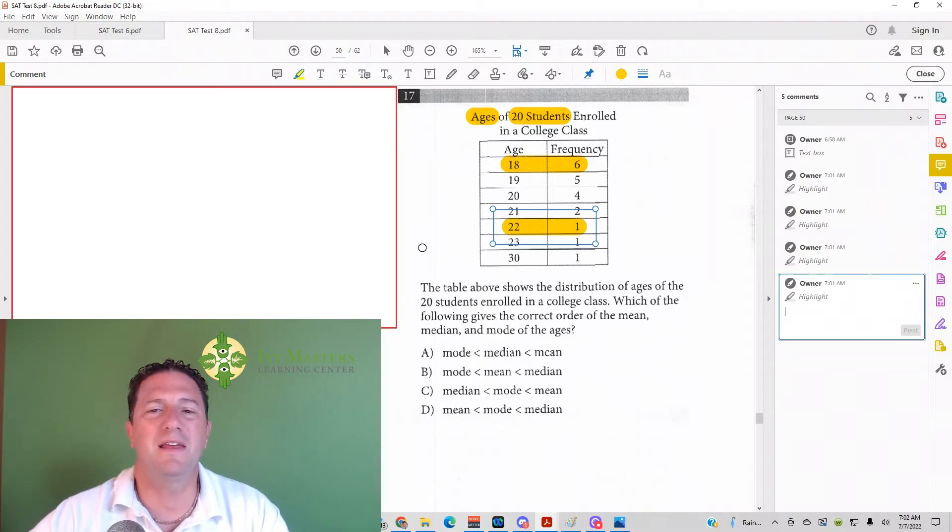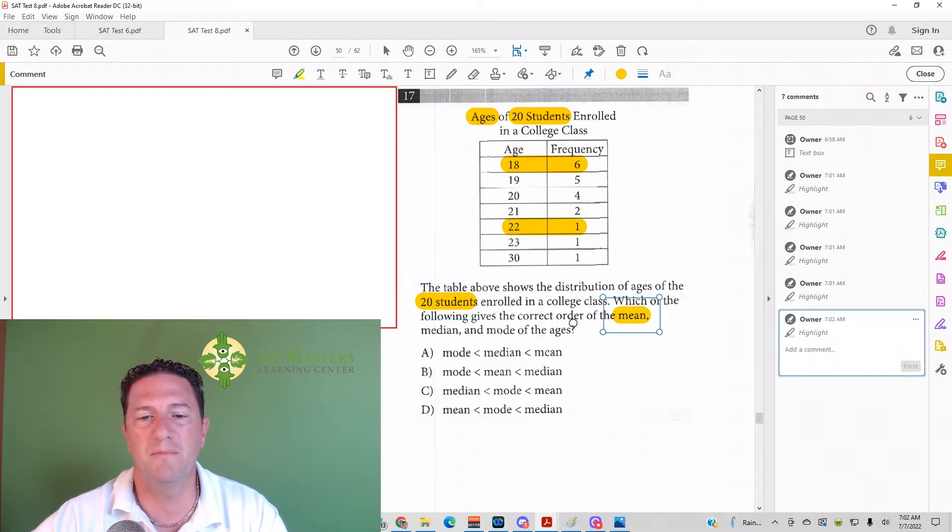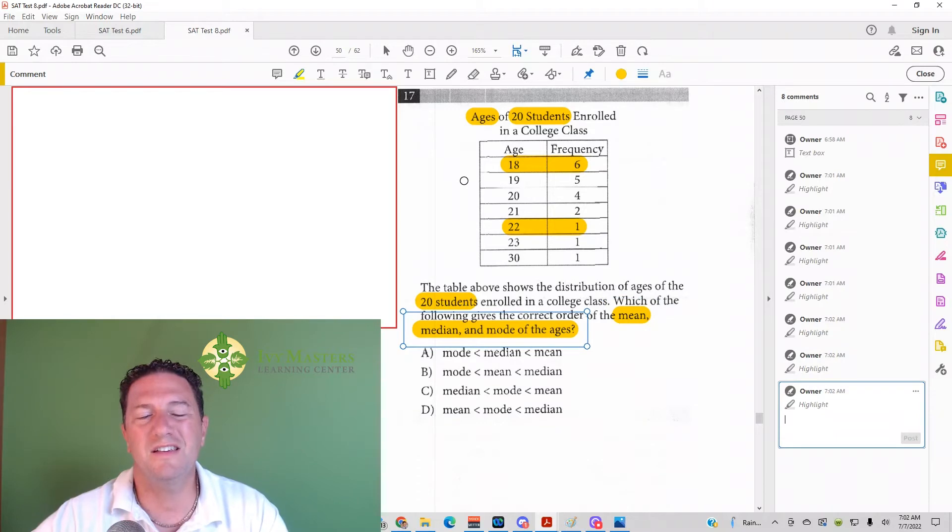So keeping that in mind, we're going to read this question. The table above shows the distribution of the ages of 20 students enrolled in a college class, which the following gives the correct order of the mean, median, and mode of the ages. The easiest thing to find, I think, is the mode.